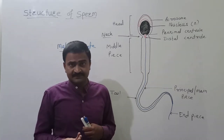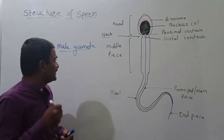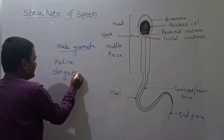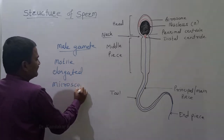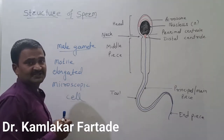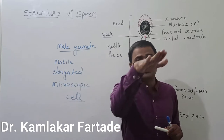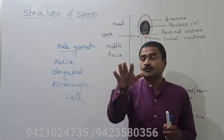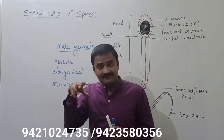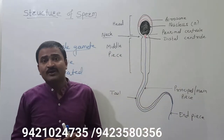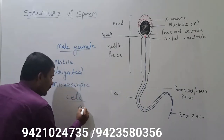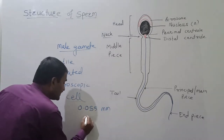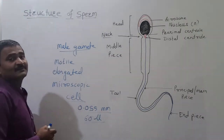Sperm is the male gamete. Sperm is a motile, elongated, and microscopic cell. It is motile — it can move from one place to another place in the female genital tract. The sperm measures about 0.055 mm in length, and it measures about 60 microns in length.